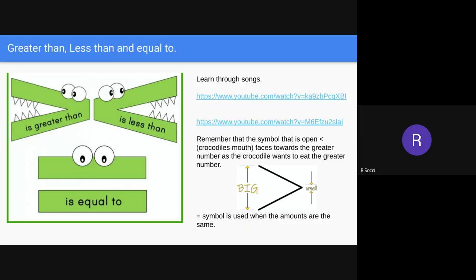Today we are looking at greater than, less than, and equal to. This is something that is not new to us. We have been looking at this in Year One and we are going to continue with it in Year Two. We have three symbols that we are going to look at today: the greater than symbol, the less than symbol, and the equal to symbol.